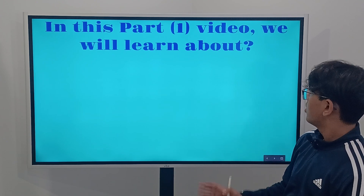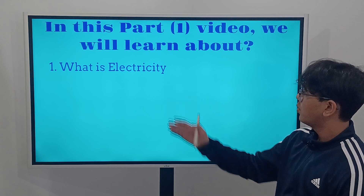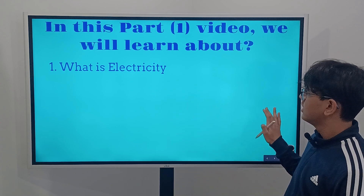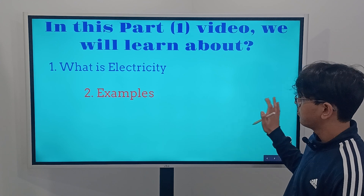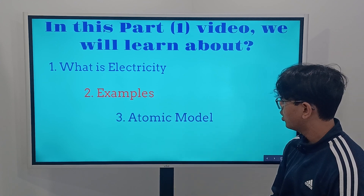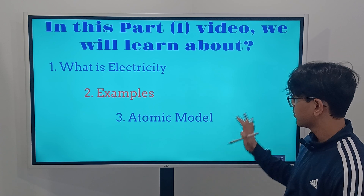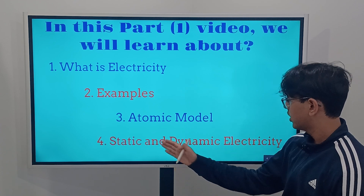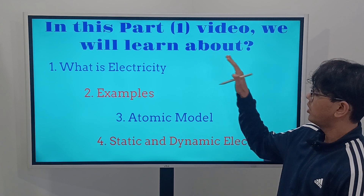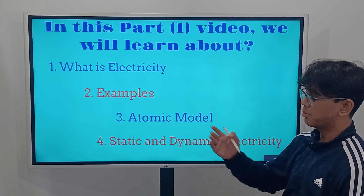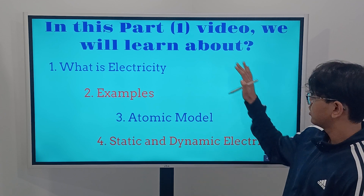So in this video, part one, what are we going to learn about? First, we're going to learn about what electricity is. Second, we're going to learn about some examples of electricity. Third, we're going to go over the atomic model and make connections with electricity. And fourth, we're going to go over static and dynamic electricity. This is just our part one video, and later on we're also going to make a part two and part three video in the series, so make sure to check those out too.